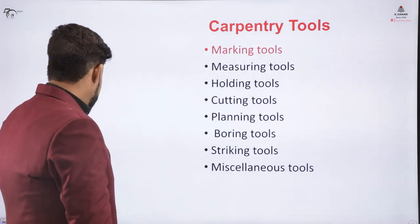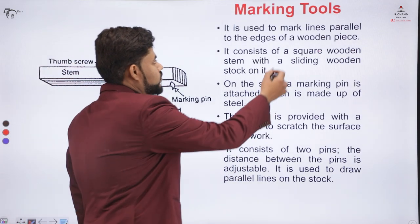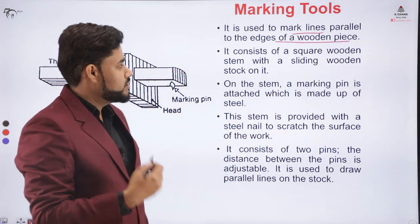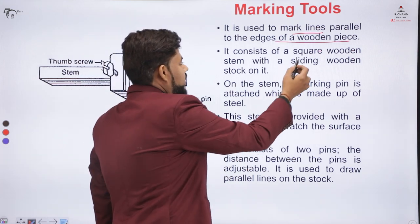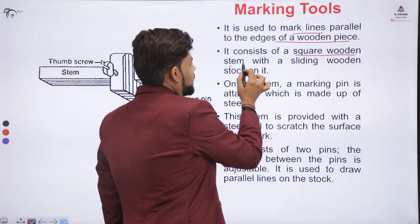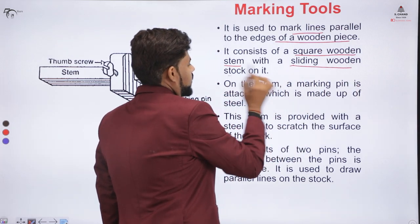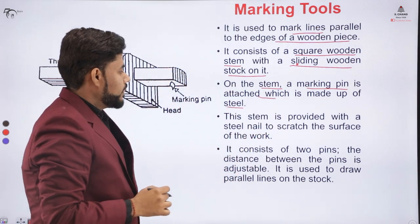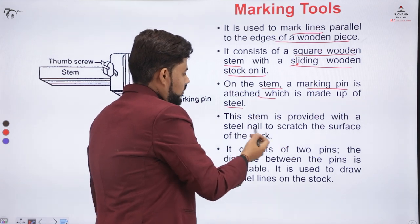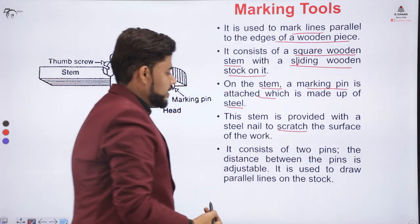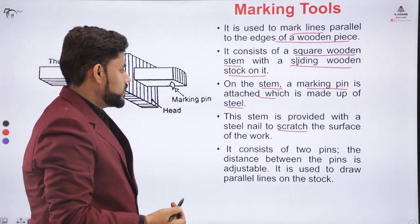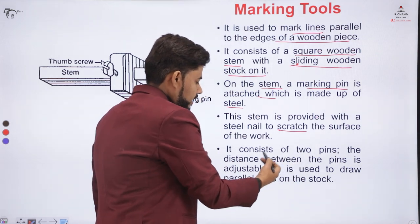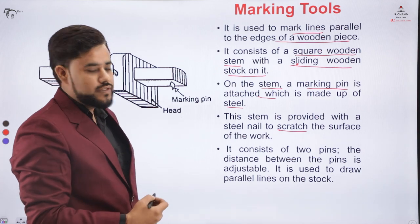Number one is the marking tool. As the name suggests, it is used to mark the lines on the edges of the wooden piece. If we want to mark lines on the edges, we use this marking tool. It consists of a square wooden stem with a sliding wooden stock on it. On the stem there is a marking pin made up of steel, and when this pin strikes or scratches the surface, we obtain a mark on the wooden surface. We can easily mark a parallel line on the surface with the help of that marking pin.